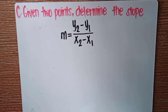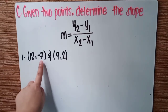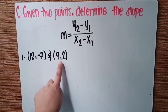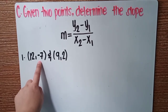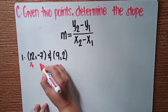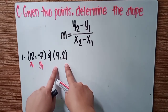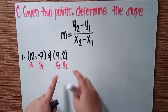Finally, if the given are two points, use this formula: the slope is equal to Y sub 2 minus Y sub 1 over X sub 2 minus X sub 1. Example number 1: the points are (12, −7) and (9, 2). The first point is (12, −7) — mark this as X sub 1 and Y sub 1. The second point (9, 2) is marked as X sub 2 and Y sub 2.